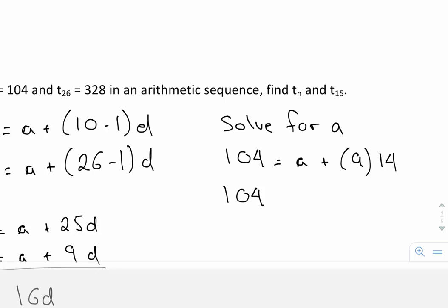So I get 104 equals A plus 126. And if I subtract that from 104, I get negative 22. And that's my A value.